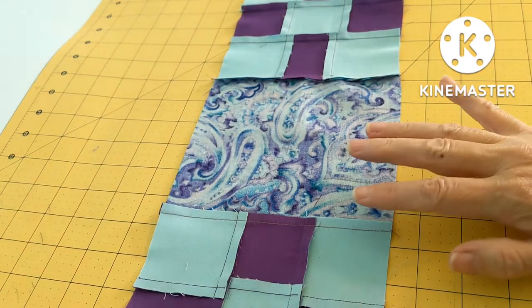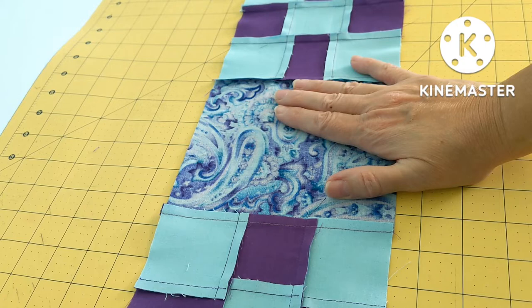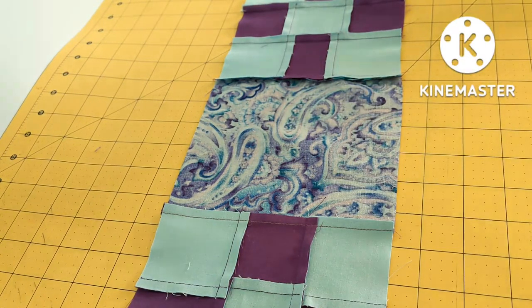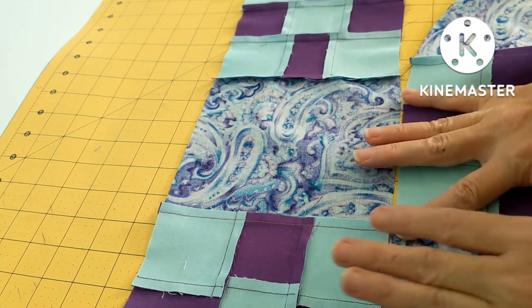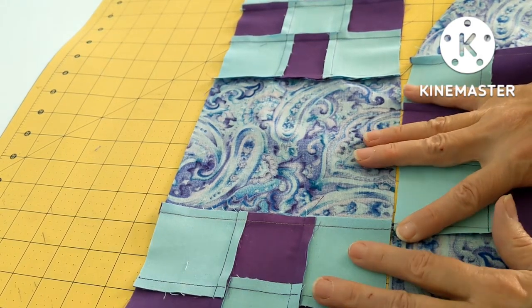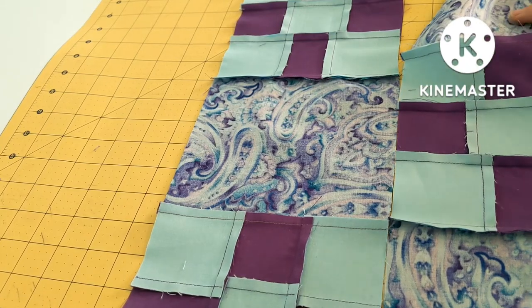When you sew your squares together I find it easiest to press to my plain square. And then that way when you go to sew your rows together you will have those nesting seams. And then it's just a matter of getting all of your rows together.